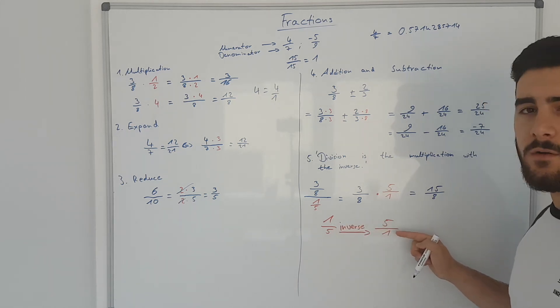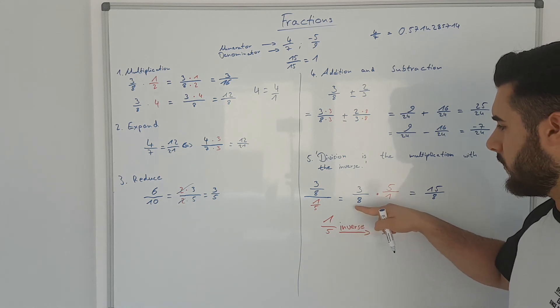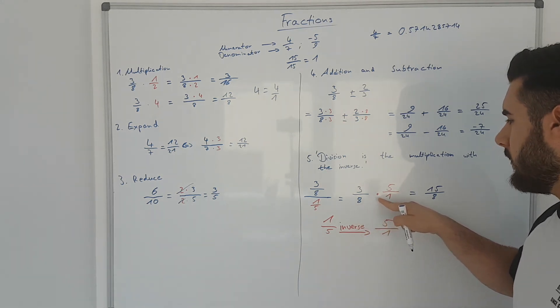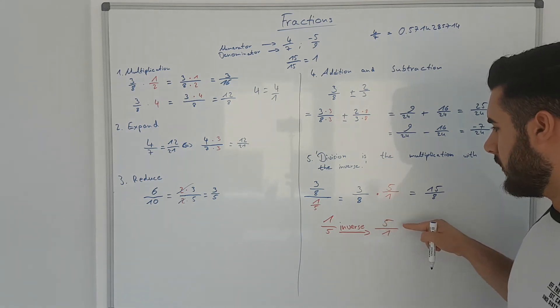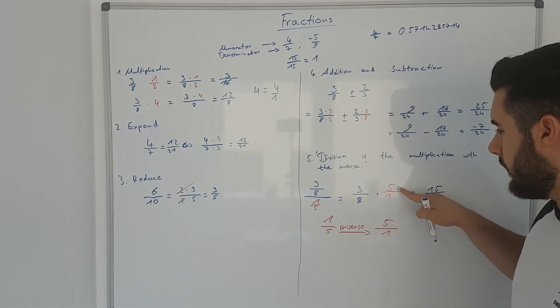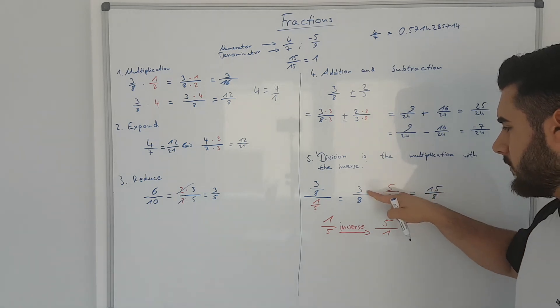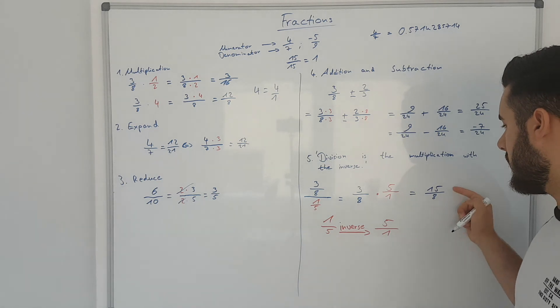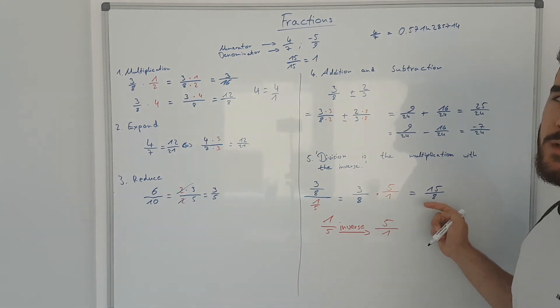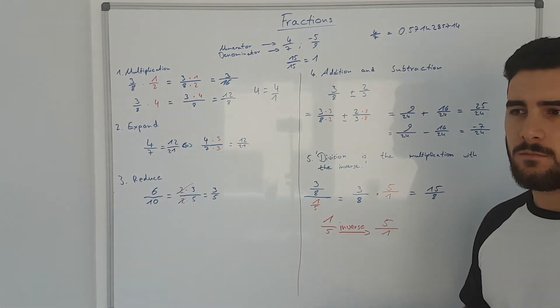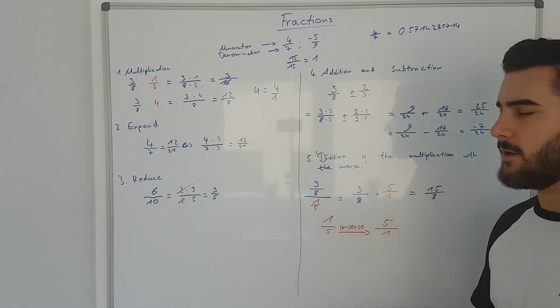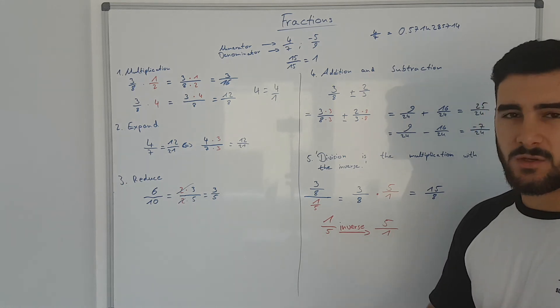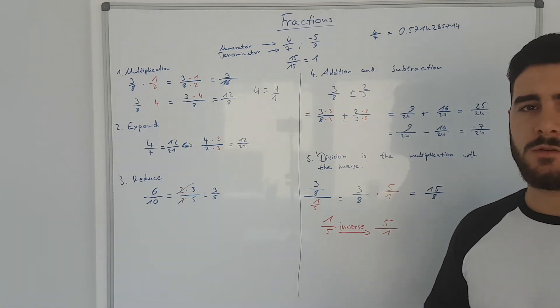So what you do next is you take your first fraction as you had it before and multiply that with the inverse of the second fraction. So what we did over here is 3 over 8 times 5 over 1 and then you'll get basically the result which is 15 over 8 and that's it. No magic behind that, nothing else, just simple mathematical rules that you can apply to that to get to your results quicker.